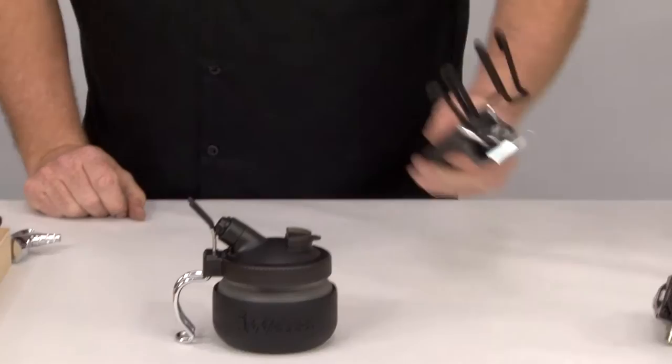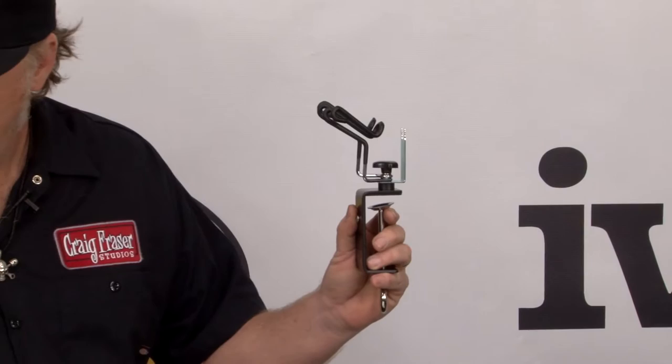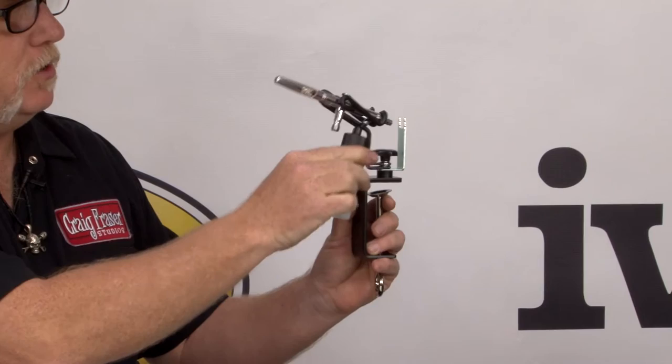Secondly, we have the universal airbrush holder. It's called universal for the exact same reason. You can put the trigger gun, the gravity gun, and the bottle feed in there. Same design, same rubberized fitting for security.